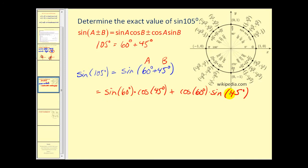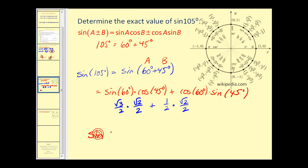Using the unit circle to find these values: sine of sixty degrees is square root three over two, cosine of forty-five degrees is square root two over two, cosine of sixty degrees is one-half, and sine of forty-five degrees is square root two over two. The denominator is four in both products. The numerator is square root six plus square root two, so sine of one hundred five degrees equals the quantity square root six plus square root two, all over four.